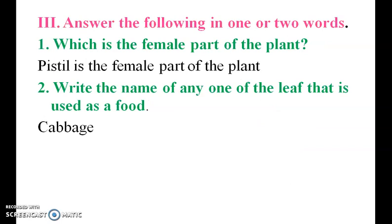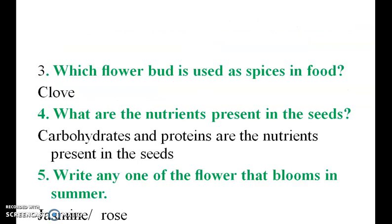Answer the following in one or two words. Which is the female part of the plant? Pistil is the female part of the plant. Write the name of any one leaf used as food: cabbage. Which flower bud is used as a spice in food? Clove.